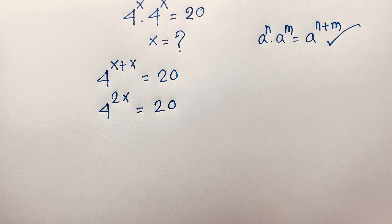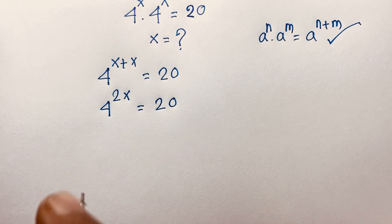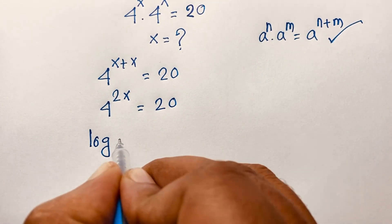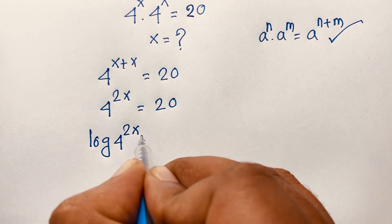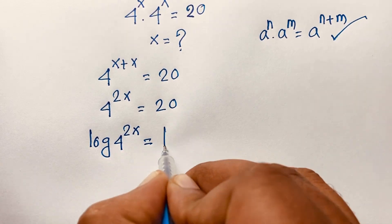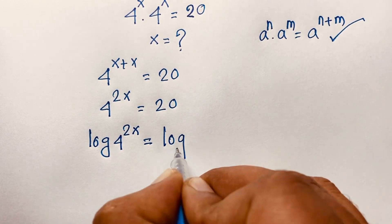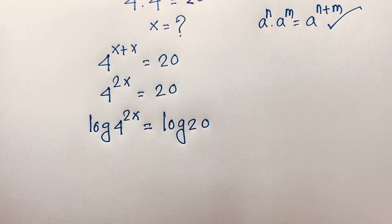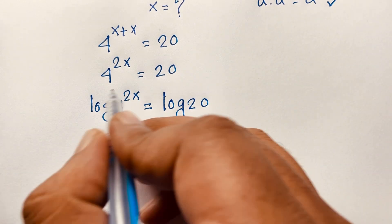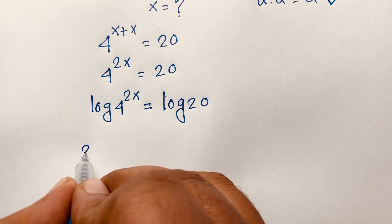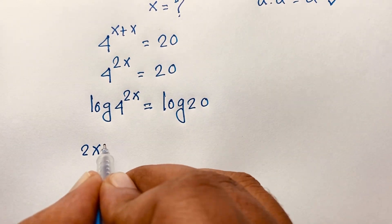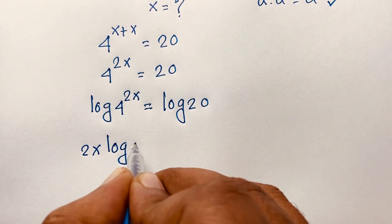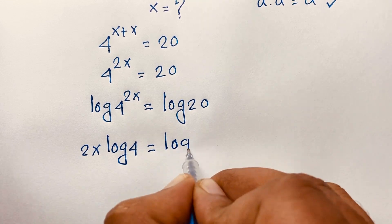Then if I apply the natural log to both sides, log of 4 to the power 2x is equal to log 20. At this moment, I can move the exponent down, so 2x times log 4 is equal to log 20.